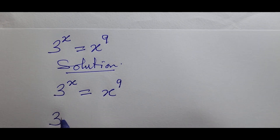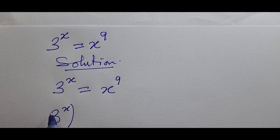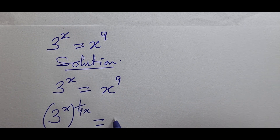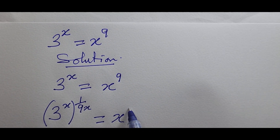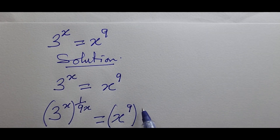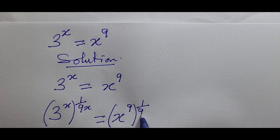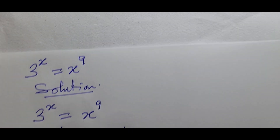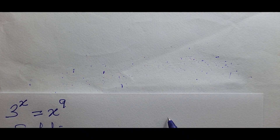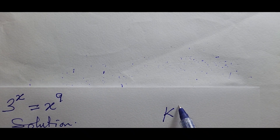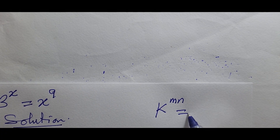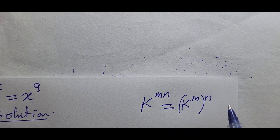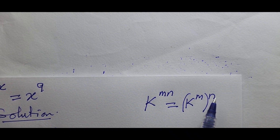So on the left we have 3^x all raised to 1/(9x), and on the right we have x^9 all raised to 1/(9x). We apply the indices rule which states that k^(mn) equals (k^m)^n — in other words, we can multiply the exponents.